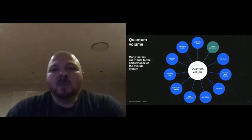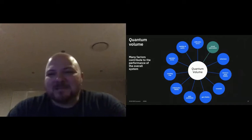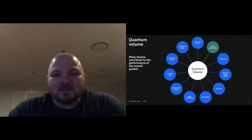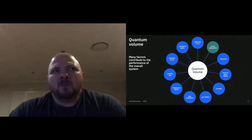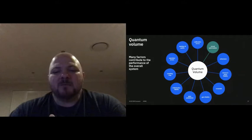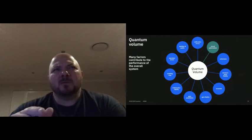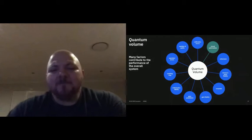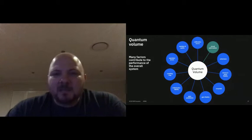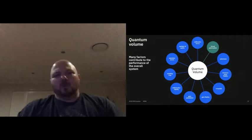If you can only hold coherence for, say, one second, and your gate takes half a second to change state, then you can only run two gates. If you've got high coherence but low gate fidelity, is that better? You can't just take coherence either. It's all these things that come together into what we call quantum volume.